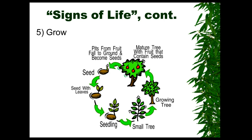All living organisms grow. Babies come from two cells and then grow into an adult, just like seeds mature into trees.